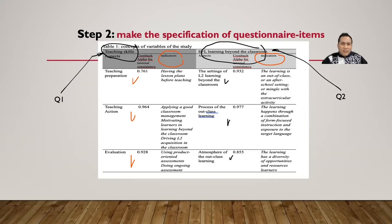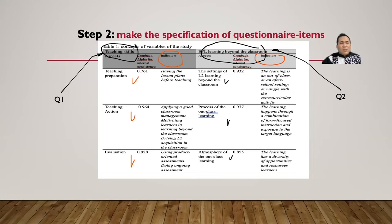In the specification table, teaching skill is divided into three aspects: teaching preparation, teaching action, and teaching evaluation. Each aspect has indicators. For example, a teaching preparation indicator is 'having the lesson plan before teaching.' Remember, indicators must be operational — meaning you should be able to count or observe the performance.